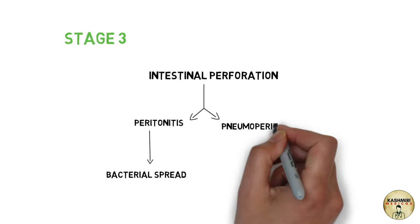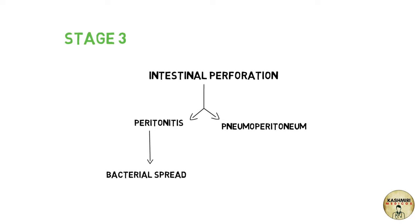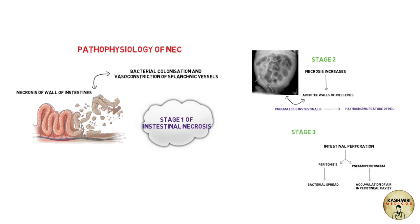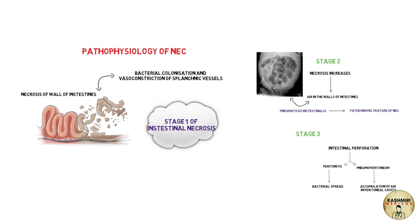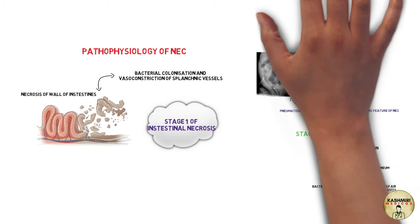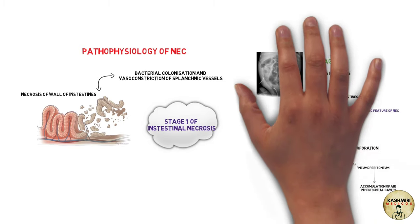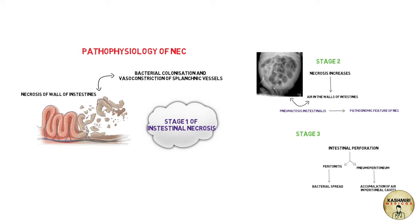As the necrosis further increases in the walls of the intestines, it results in intestinal perforation which leads to peritonitis — inflammation of the peritoneum due to spread of bacteria — and pneumoperitoneum due to accumulation of air. These are the three stages: stage one is intestinal necrosis, stage two is pneumatosis intestinalis, and stage three is intestinal perforation.